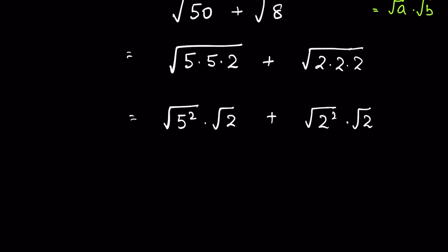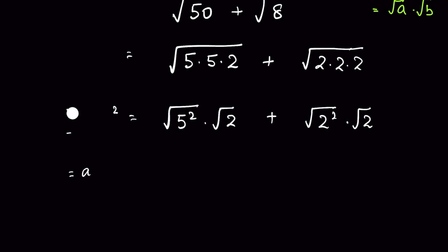Now, square root means raised to the power of 1/2. So when we square a number, the exponent is multiplied by 2, and the 2s cancel, giving us just a. Also, to solve a square root we divide numbers into groups of 2, so 5² under square root simplifies to 5, because square root of 25 is 5.